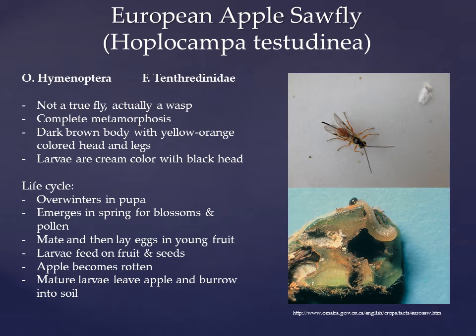The second species I will introduce is Hoplocampa testudinea, commonly known as the European apple sawfly. The European apple sawfly is an insect from the order Hymenoptera, family Tenthredinidae. Its name is a misnomer — it is actually a wasp, but because it moves around between apple trees like a fly would, it was incorrectly named a fly. It is characterized by having a dark brown colored body with a yellow to orange color on the head and legs. These wasps can grow to be 7 to 8 millimeters long and they exhibit complete metamorphosis. The larvae are a light cream color with a dark head.